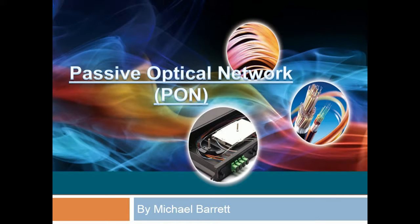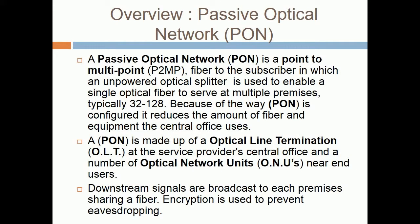Passive Optical Network PAN by Michael Baralt. A Passive Optical Network PAN is a point-to-multipoint fiber to the subscriber, in which an unpowered optical splitter is used to enable a single optical fiber to serve multiple premises, typically 32 to 128.